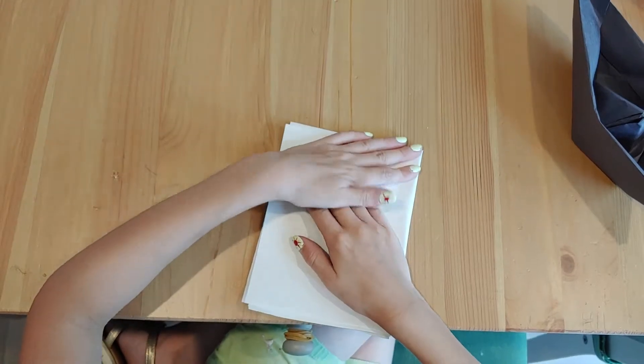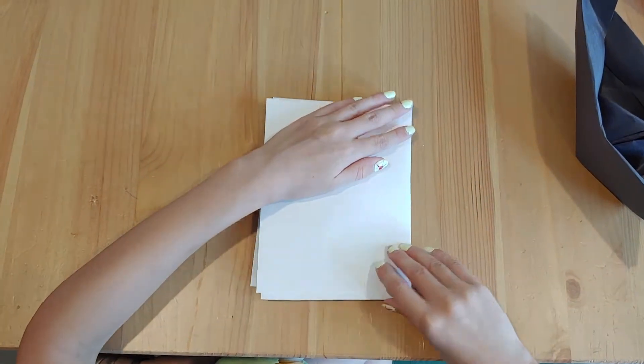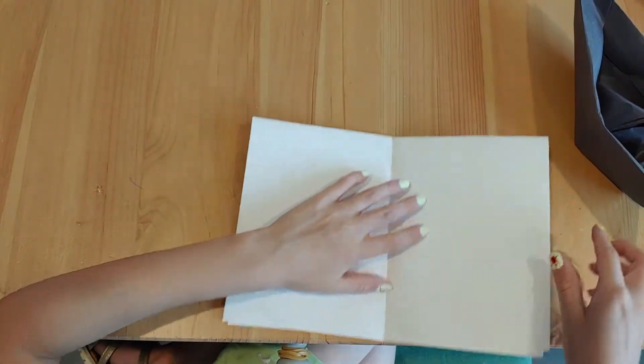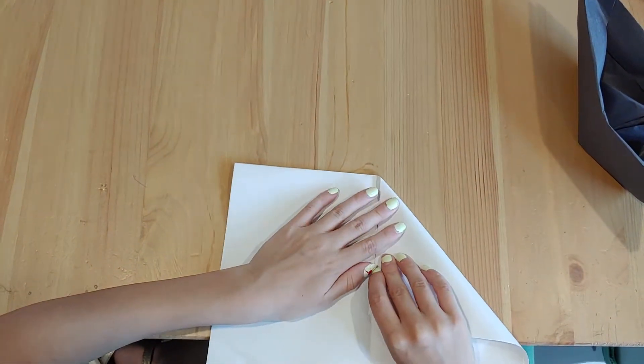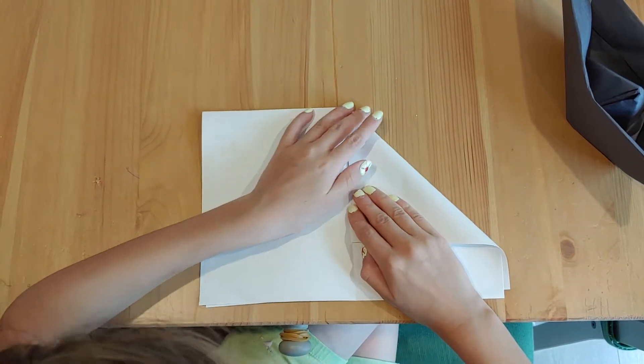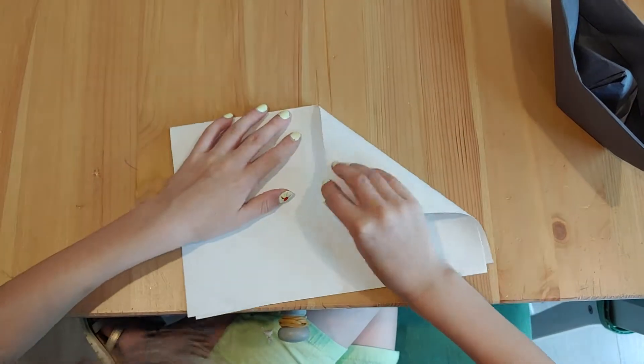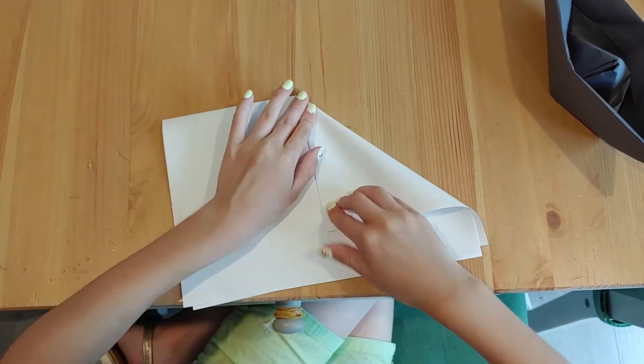And then fold that like a smaller card. Then you open this up, you fold this down, and when you open it up you might see a little line—that's where you should match it up.